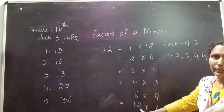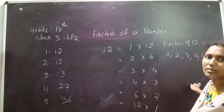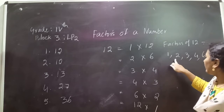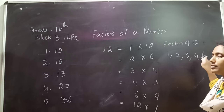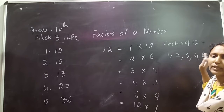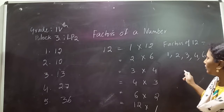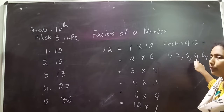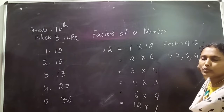Don't write the repeated numbers — no need to write the same numbers again. The factors of 12 are 1, 2, 3, 4, 6, and 12. What are the factors of 12? 1, 2, 3, 4, 6, and 12.